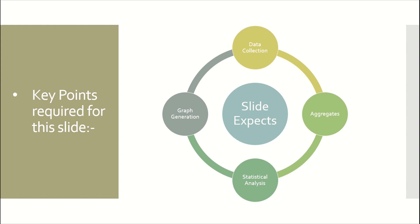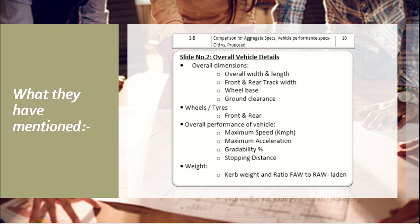What they have mentioned they require from this slide in the index: they ask for a comparison for aggregate specs, vehicle performance specs — old, BS, and proposed. Some parameters are also mentioned in the image. We suggest you fill this slide after completing your other department slides like suspension, steering, CAE, brake, and transmission.